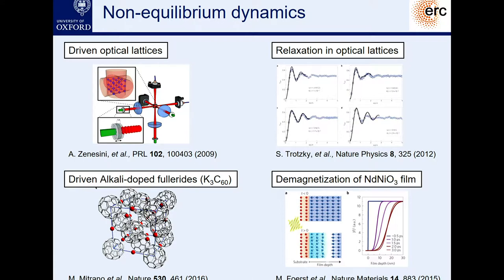In the left-hand column, there's an optical lattice experiment where a mirror is shaking. Through this shaking of the mirror, one tries to reduce the hopping rates and induce a kind of Mott insulating state from a superconducting state by shaking the lattice. Similarly, in condensed matter systems — here I show some alkali-doped fullerides — an experiment has recently been carried out where, through shaking these buckyballs by driving the buckyball oscillations, one could induce a superconducting state, turning a normal conductor into a superconductor at very high temperatures just through driving. Both experiments have one thing in common: they take the system far out of equilibrium and induce interesting macroscopic properties.